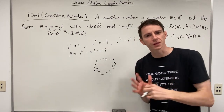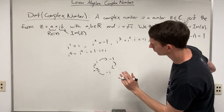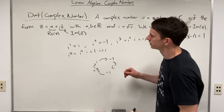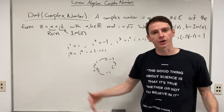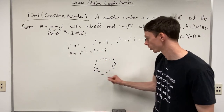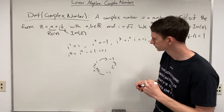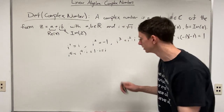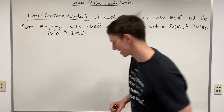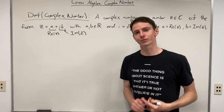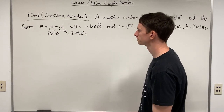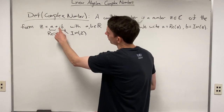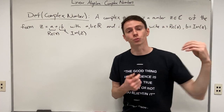If raising i to any power is confusing, you can always break it down by finding the remainder after dividing the exponent by four — it will be one of those four possible values. With a basic understanding of how raising i to various powers works, the first thing we want to do with complex numbers is perform basic arithmetic operations on them.